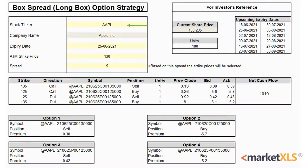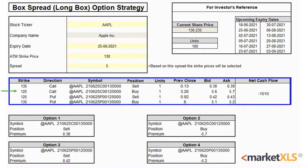For the purpose of this video, we'll be using Apple. The expiry date is 25th June, our spread is 5, and the spot is $130. To execute this strategy, we'll be buying one in-the-money call at the $125 strike with an in-the-money put at the $135 strike, and selling one out-of-the-money call at the $135 strike with an out-of-the-money put at the $125 strike.